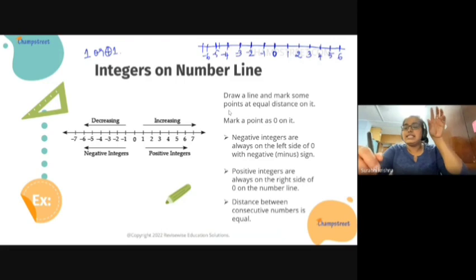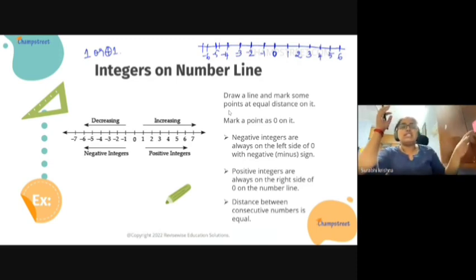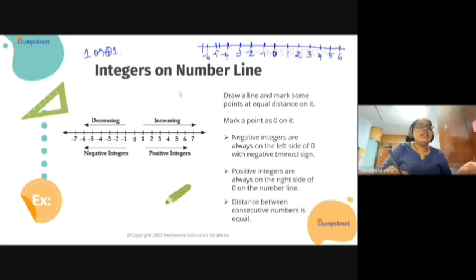...we will denote it as zero. The numbers on the right side of zero are positive numbers. The numbers on the left side of zero are negative numbers. Also, you can see here the value of the numbers...